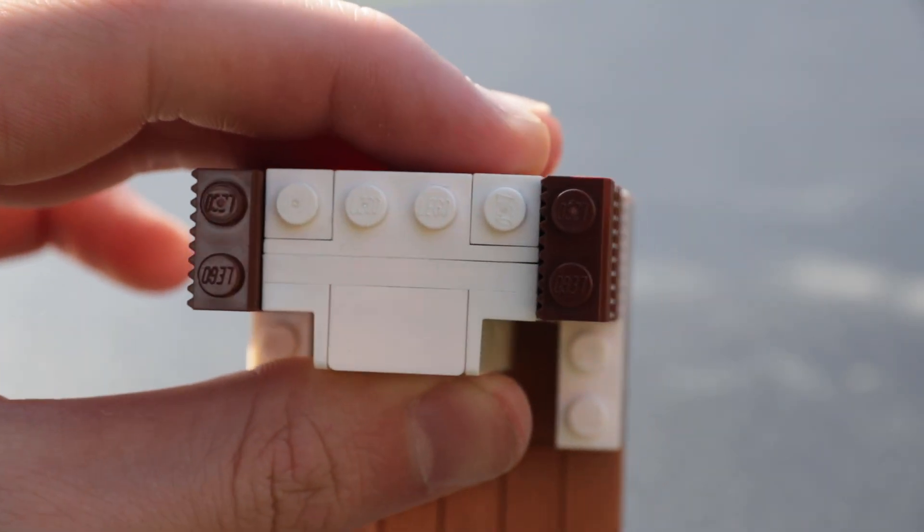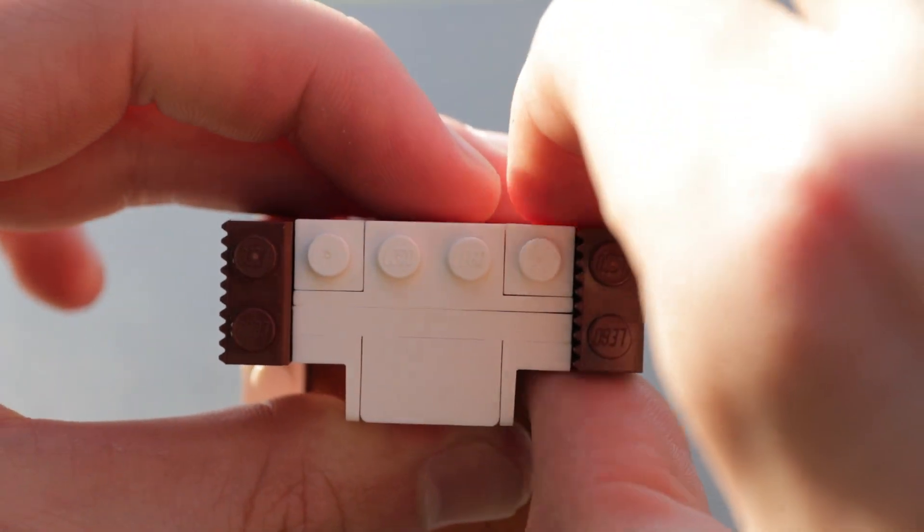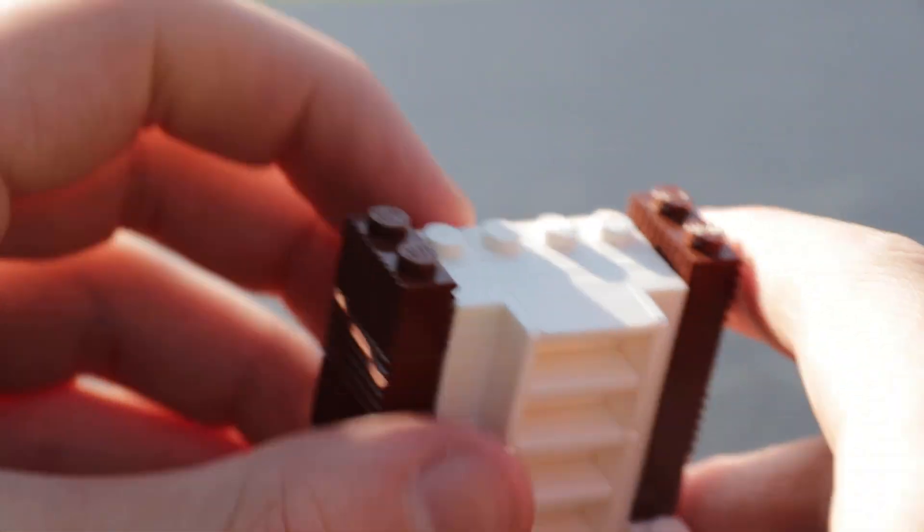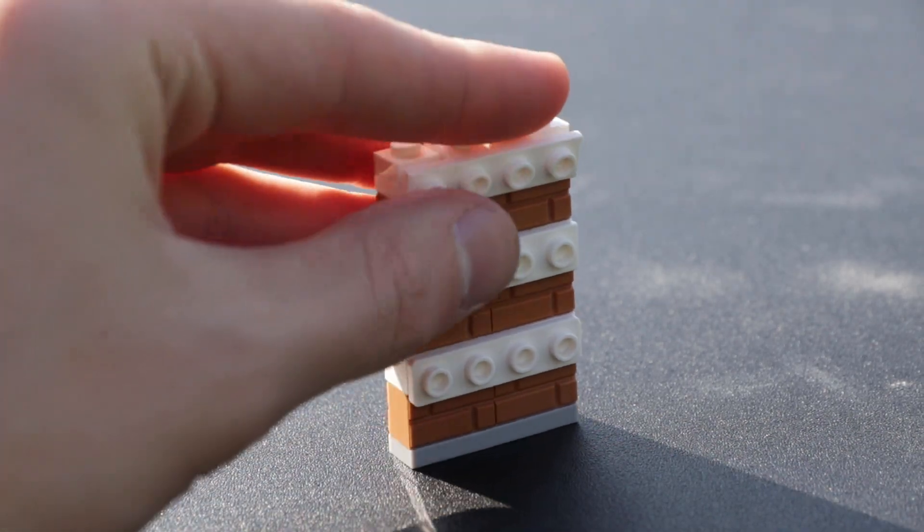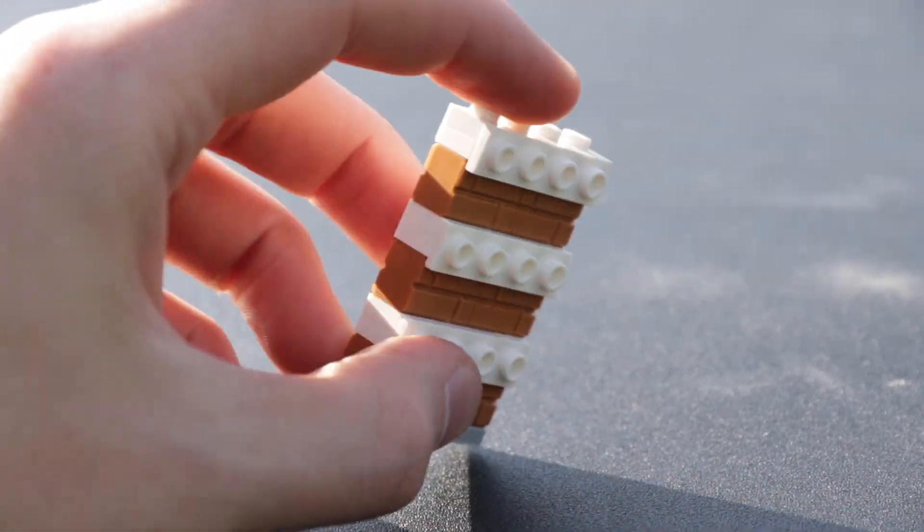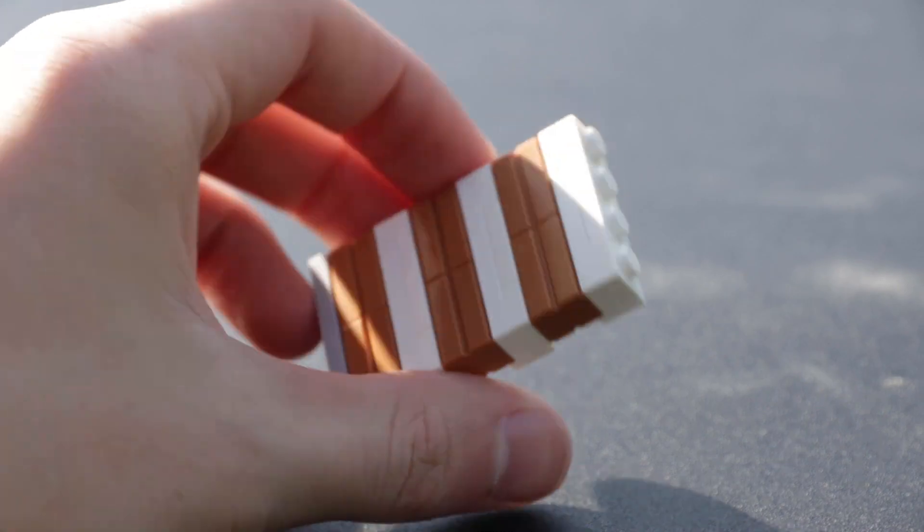You see the beauty about the bracket piece and the panel piece for that matter is that the bracket and the panel parts are actually half a plate thick. This allows you to build in SNOT techniques that go flush up against regular building techniques going up and down in only a one stud area rather than two.